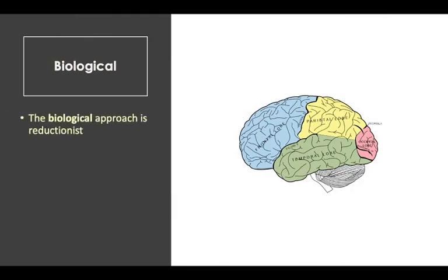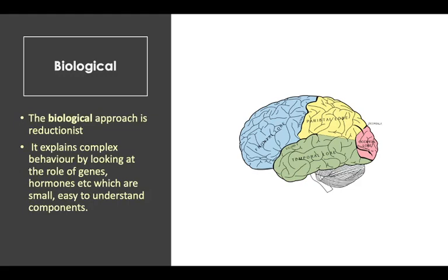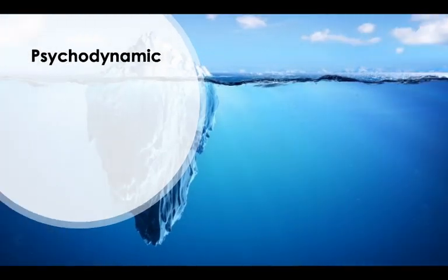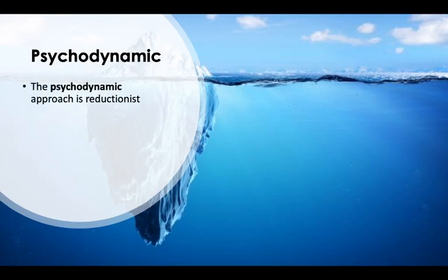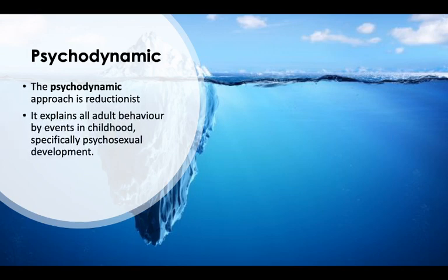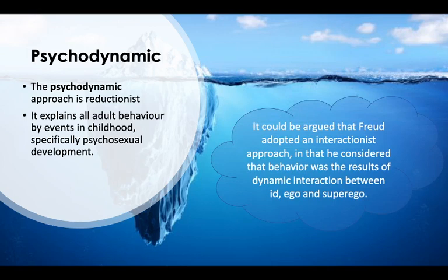Biological, as already discussed, is heavily reductionist, as it explains behavior through looking at the role of genes, hormones, etc. Then we have the psychodynamic approach — wonderful Mr. Freud's iceberg. He definitely had a reductionist viewpoint, because he explains all adult behavior in terms of what happened in childhood — this particular small event explains this behavior. It's not looking at the larger picture; it's just what is going on within these stages of development. However, it could be argued that Freud does adopt an interactionist approach, in that he considers behavior was the result of interaction between the ego and superego — there's this dynamic interaction going on.